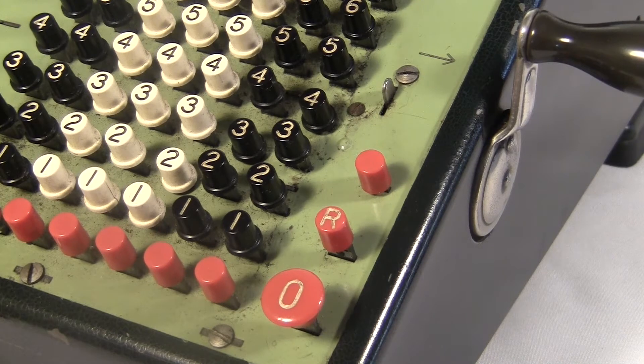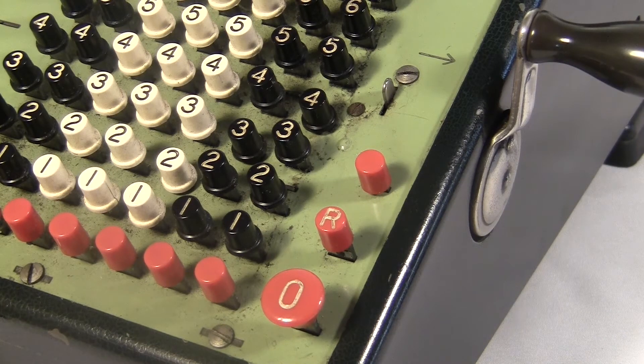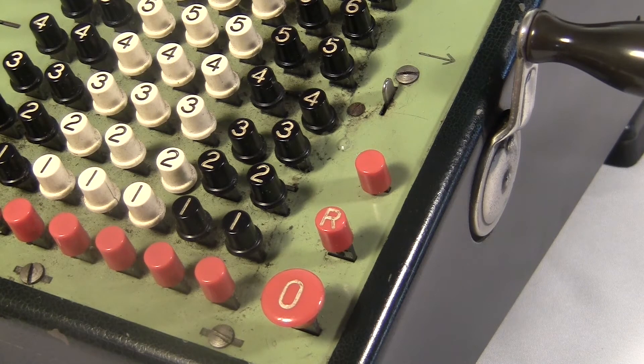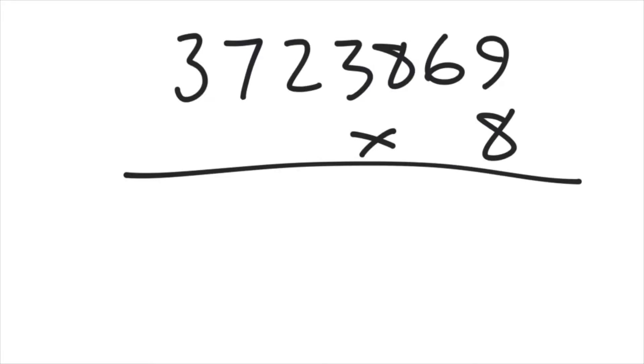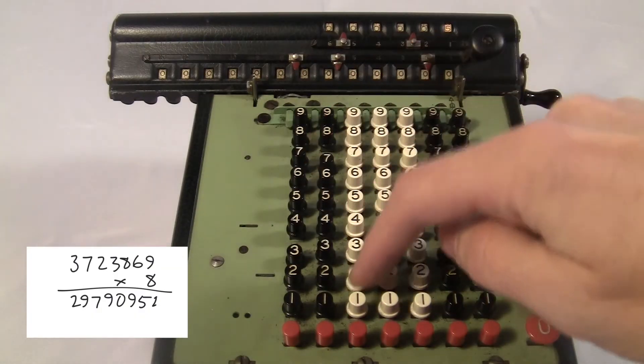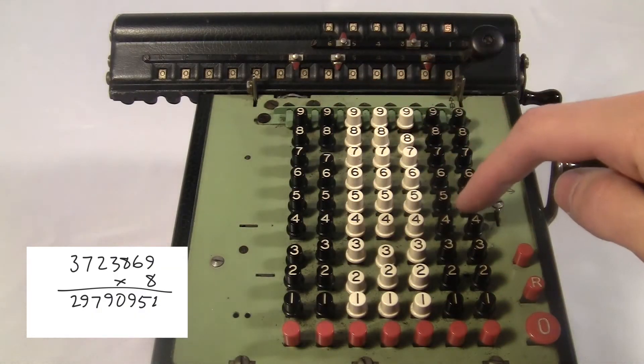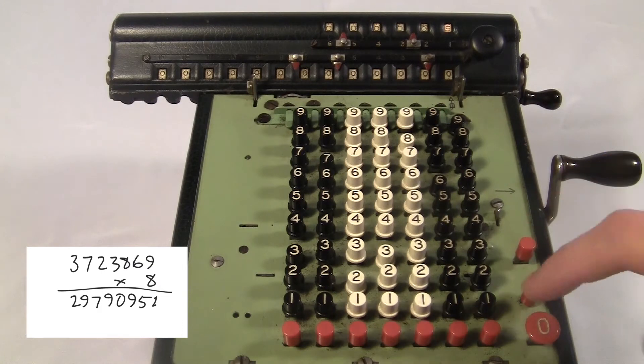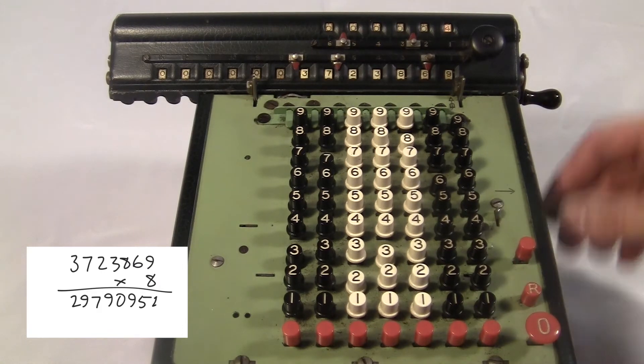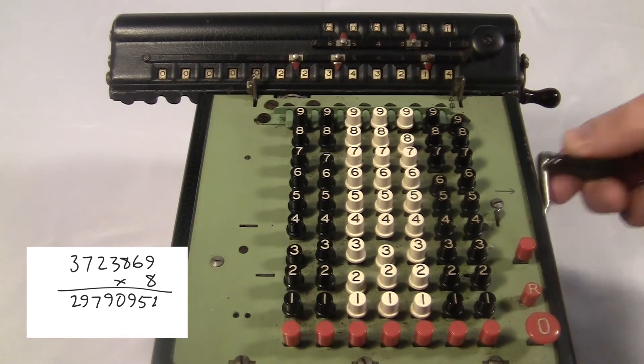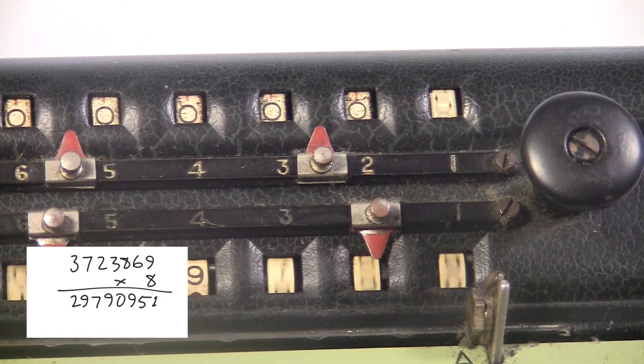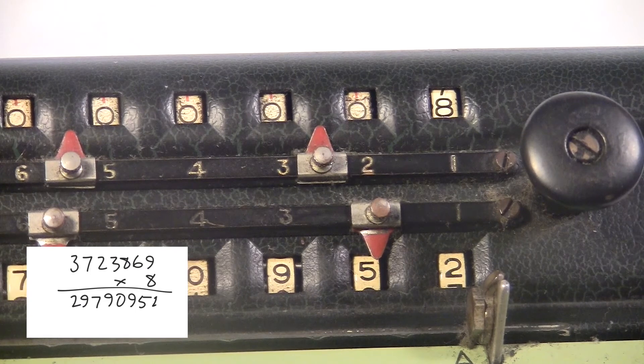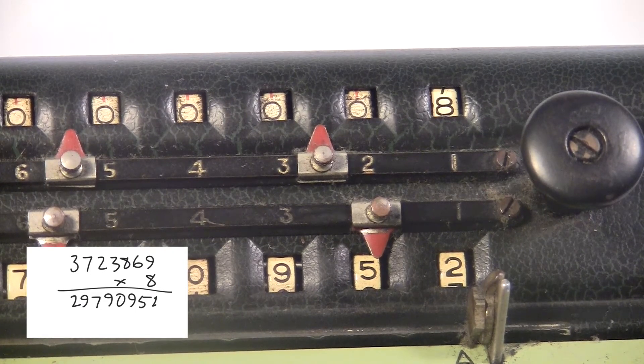Most of the fancy features of this machine have to do with multiplication. Multiplication is the same as addition over and over again. So if I want to do something like this, I can just type in that big number and then put the repeat on and turn the crank eight times. And now you can see what the upper display does. While I was doing that, it just counts how many times you turn the crank. That's nice, I guess.